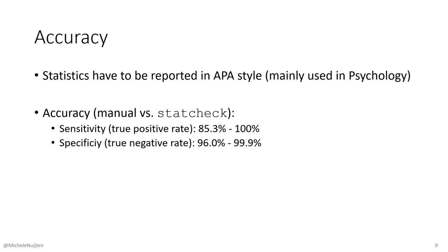There are two main things to note about how well StatCheck performs. First, it can only find statistical results that are completely reported and in APA style, which is a specific reporting style commonly used in psychology. Second, StatCheck can sometimes make mistakes in classifying results as consistent or not. The sensitivity and specificity in this classification are very high — 85% to 100%, depending on the settings used — but it's not always perfect. So take care in interpreting StatCheck's results.